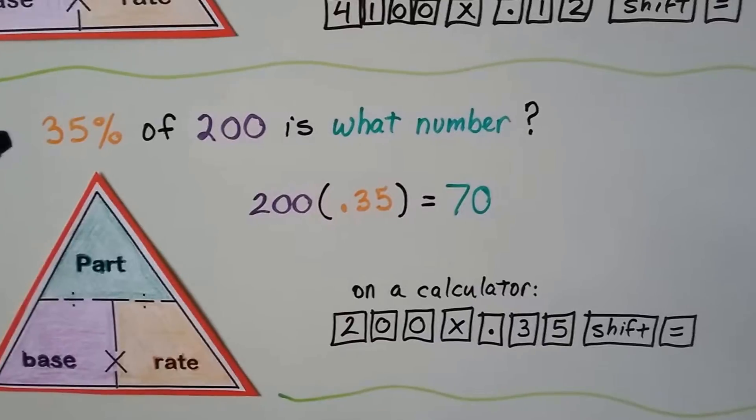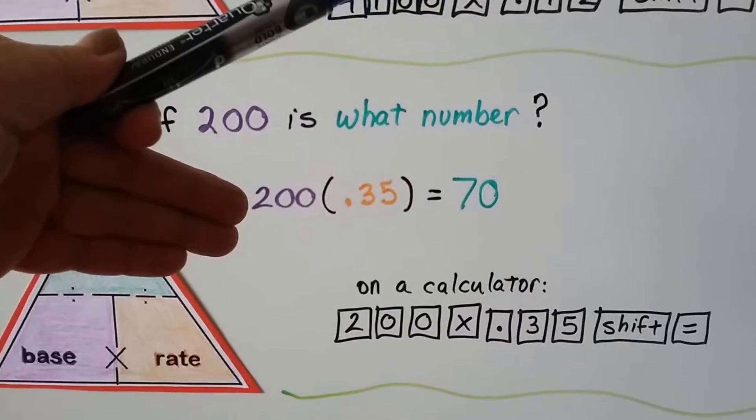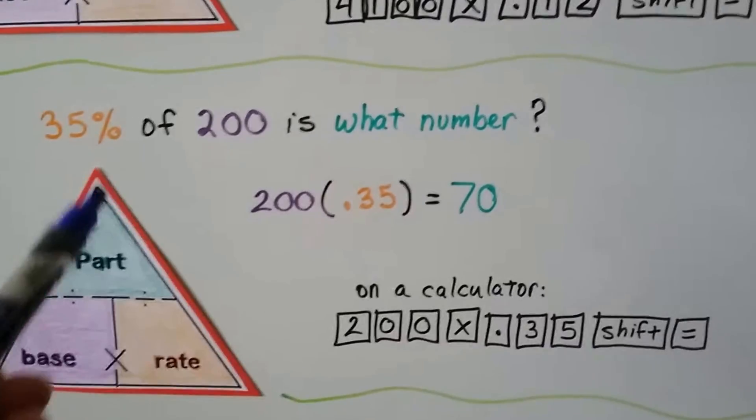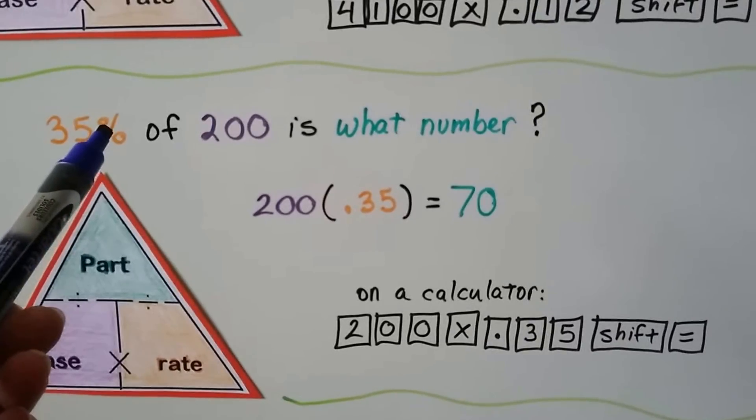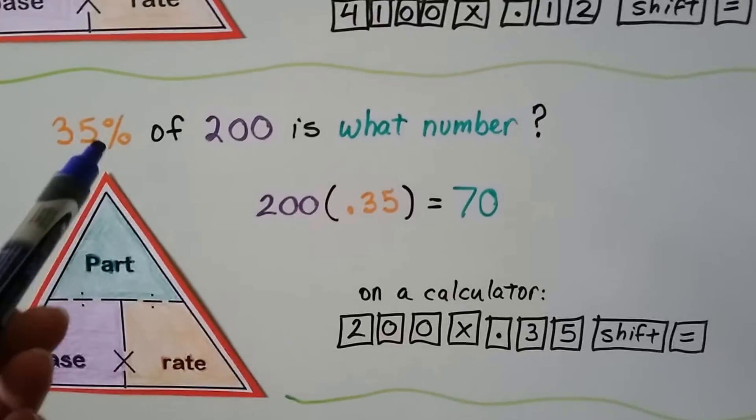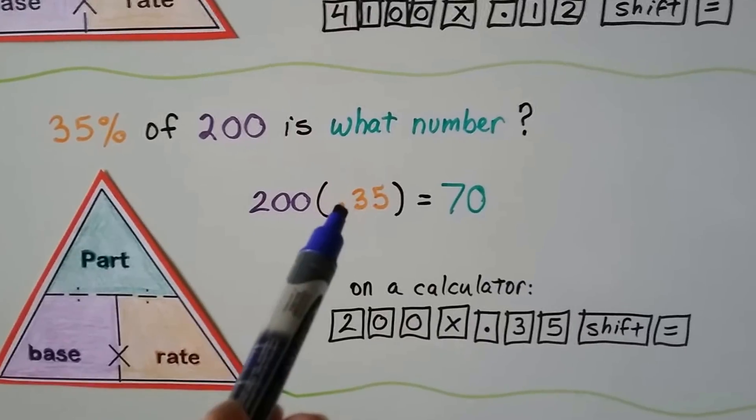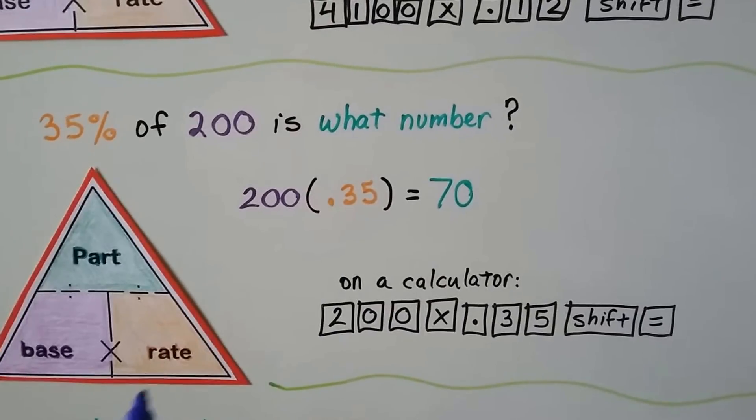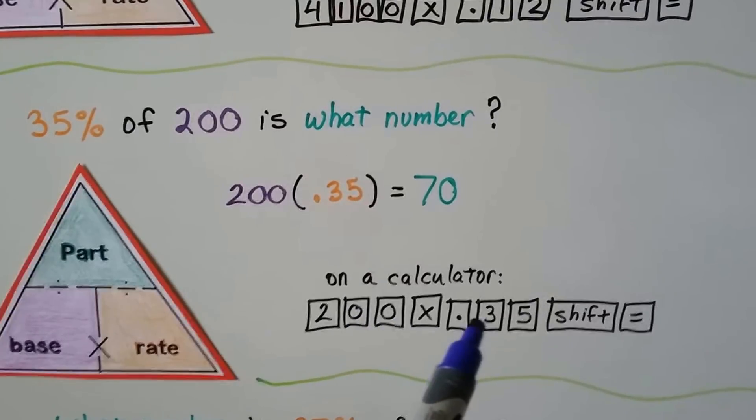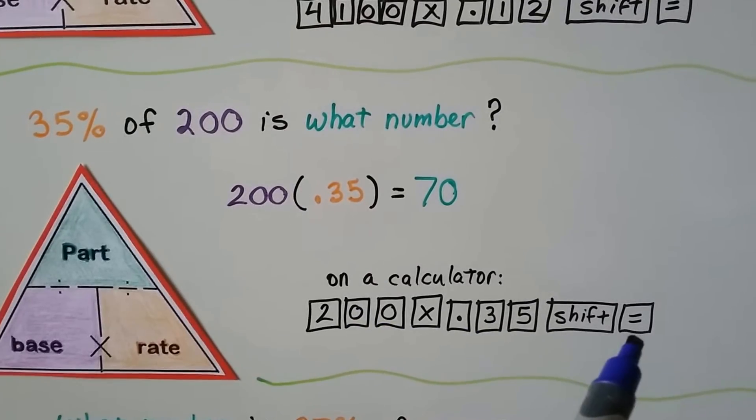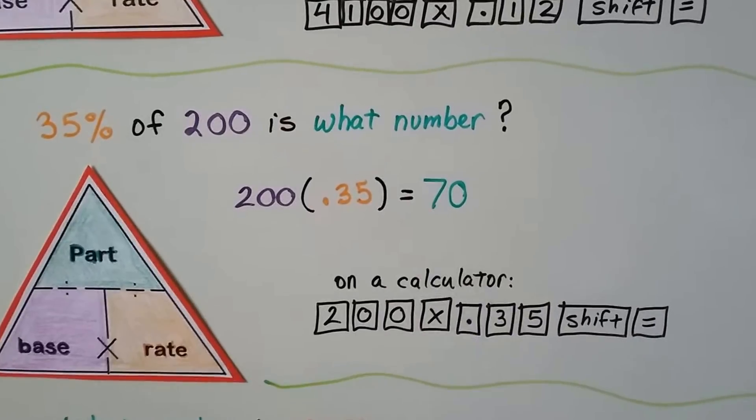35% of 200 is what number? Again, the part's missing. We cover that and see that we have to do base times rate. We have to change this to a decimal. We take off the percentage sign and go one, two hops, put a decimal point in front of the three. We have 200 times .35. On a calculator, we do 200 times .35 shift equals, and we'll get a 70. There's no money here, so we don't have a dollar sign.